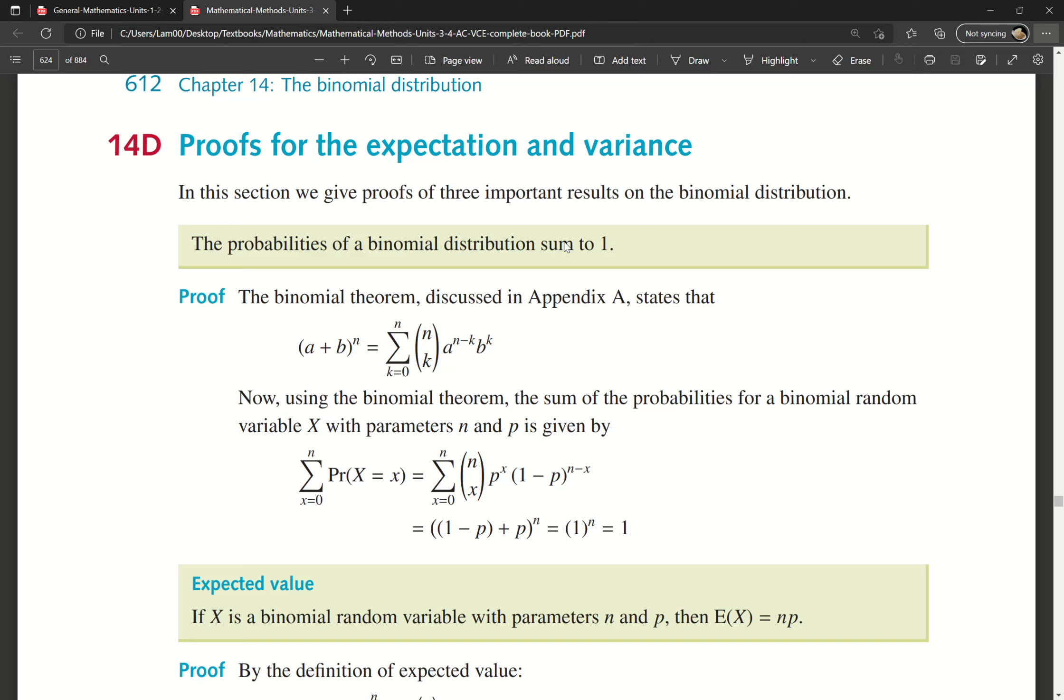This is an introduction to Exercise 14D on the proof for expectation and variance. The whole idea is that we're looking at where these formulas come from. Are they based on other formulas? Yes. Once we know that, we can identify what that approach was and how we derived it to get to the formula.